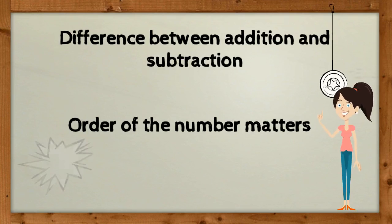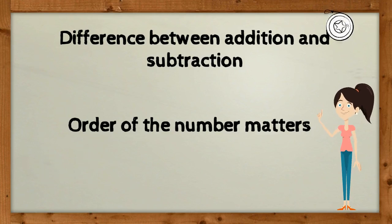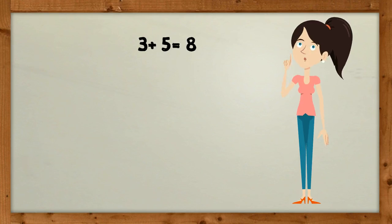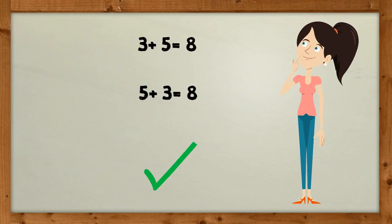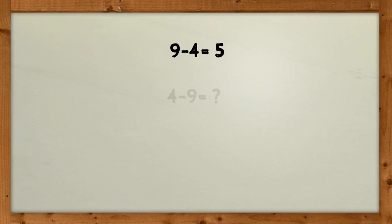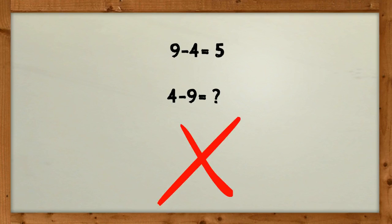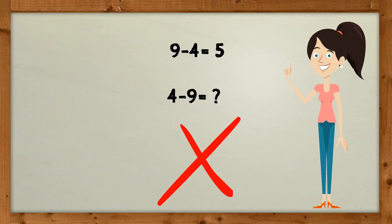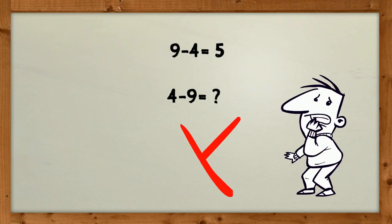The difference between addition and subtraction is that in subtraction, when we are taking away numbers, the order of the numbers matters. With addition you can switch the numbers and still get the same result — for example, 3 plus 5 equals 8, same as 5 plus 3. But we can't say the same for subtraction: 9 take away 4 equals 5, but 4 take away 9 does not give the same answer.